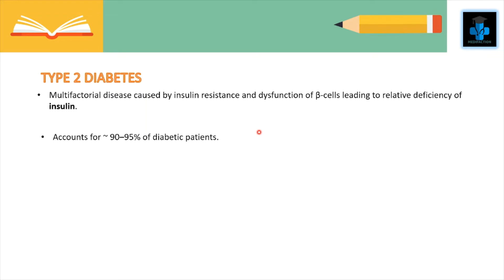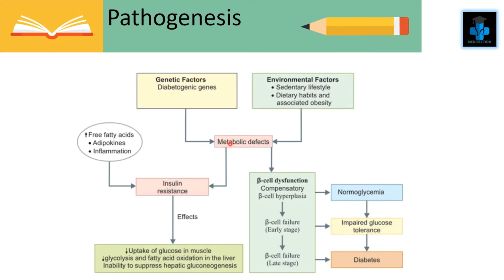Type 2 diabetes is a multifactorial disease caused by insulin resistance and dysfunction of beta cells leading to relative deficiency of insulin. It accounts for approximately 90 to 95% of diabetic patients. Environmental factors play a role and include sedentary lifestyles and dietary habits.